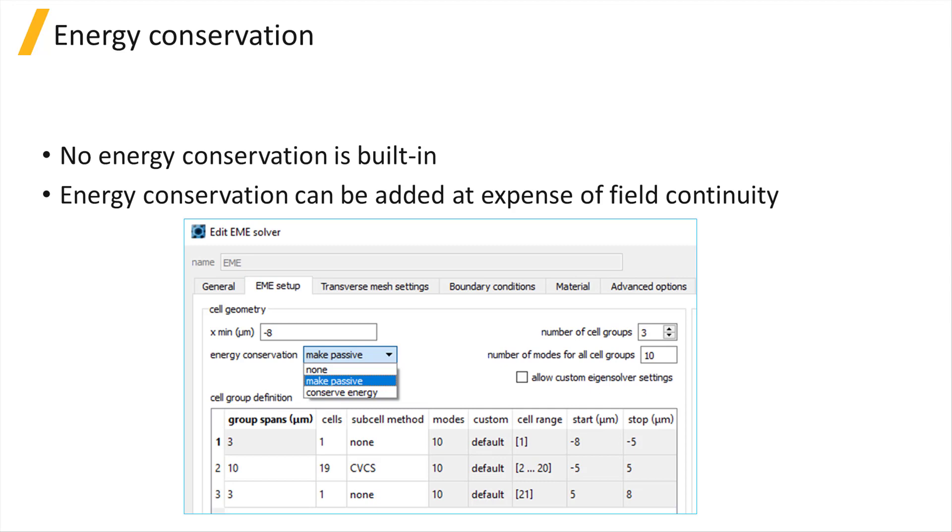The settings of the solver that are used for specifying the energy conservation will be discussed later on in the solver regions section of the course. The S matrix for each cell interface is just one of the results calculated during the propagate step, and the next unit will discuss the other results.